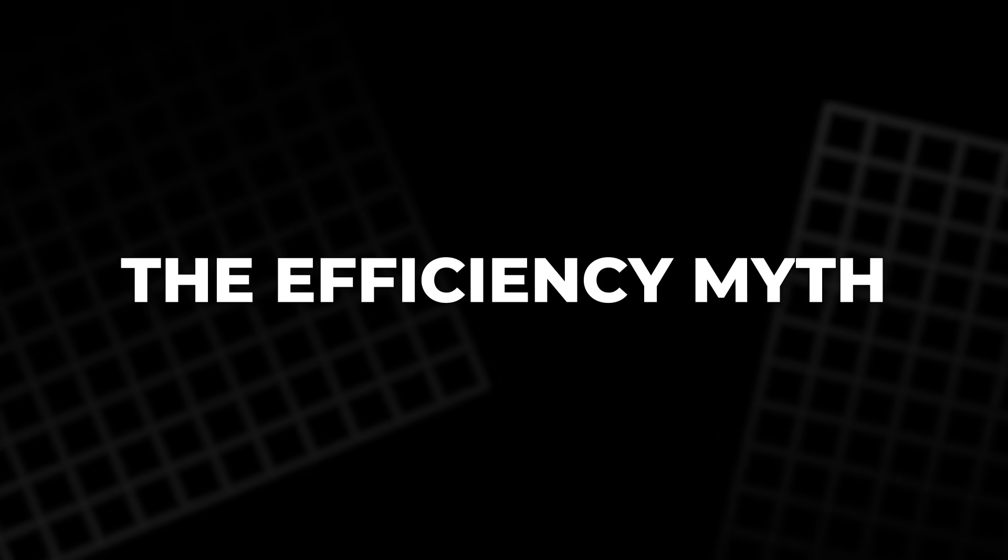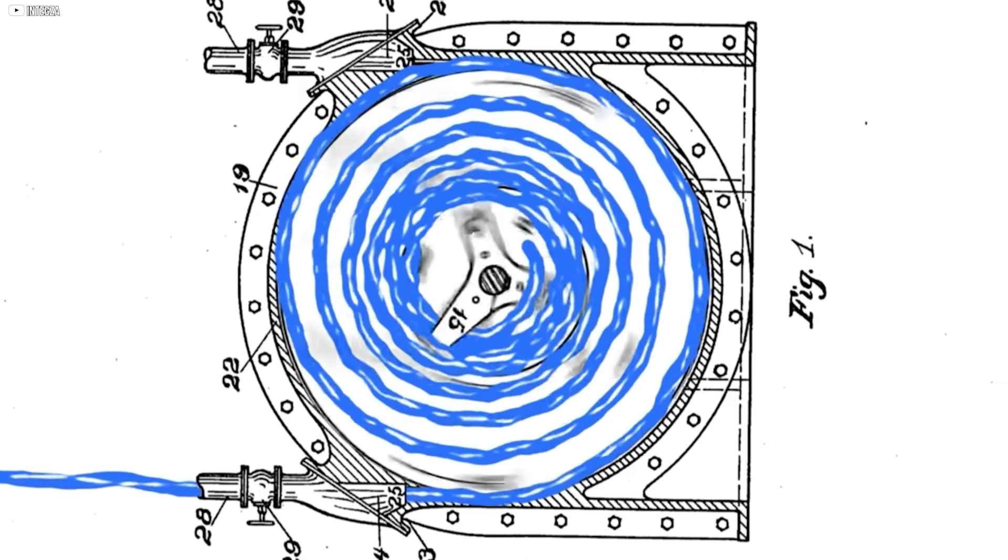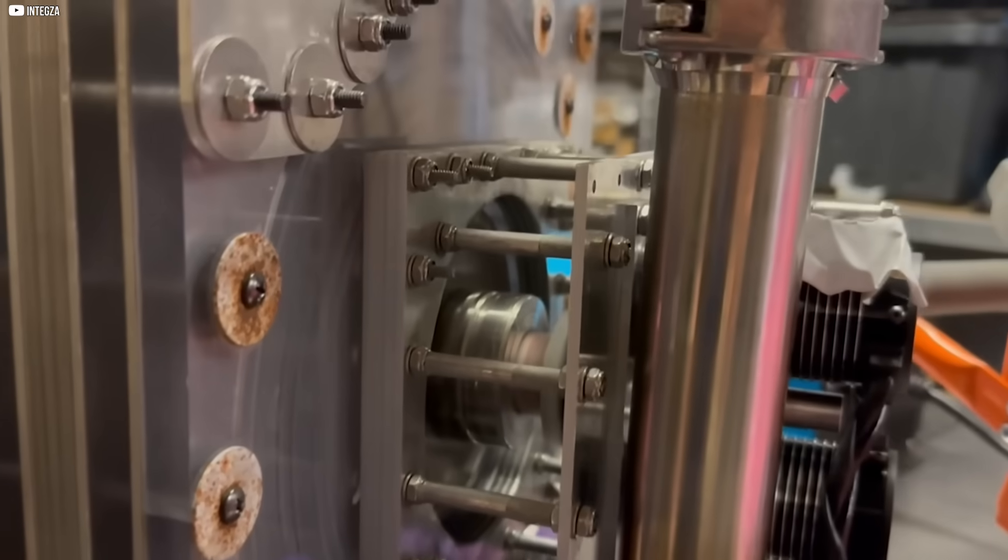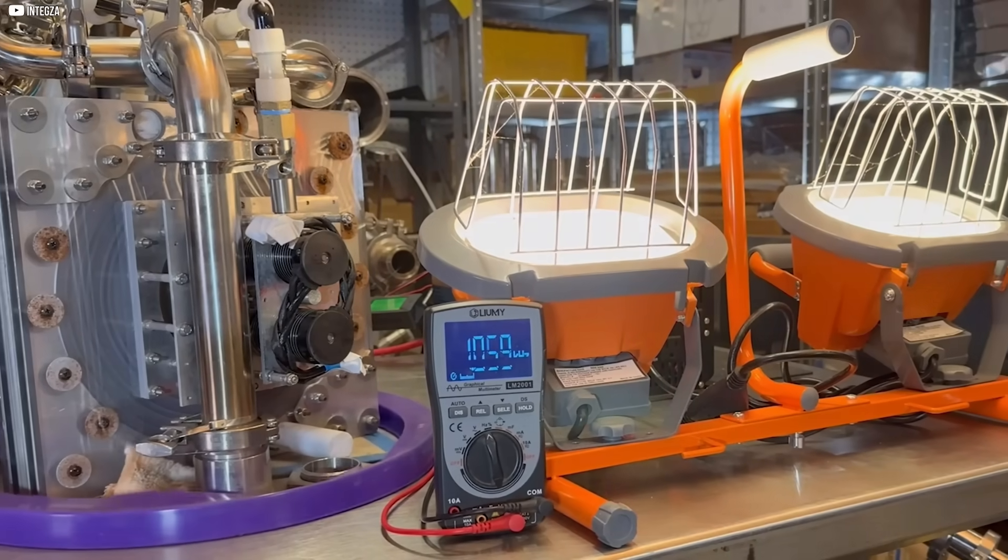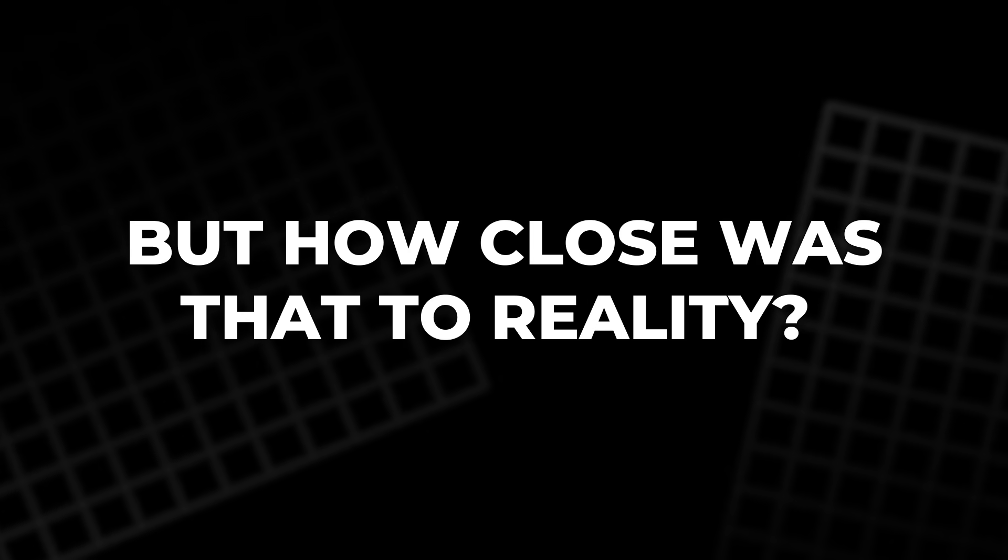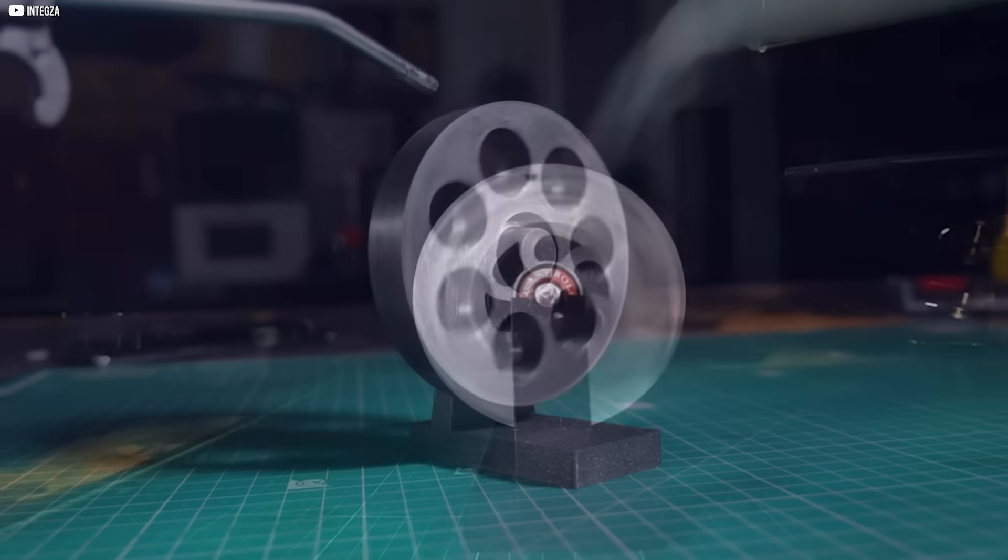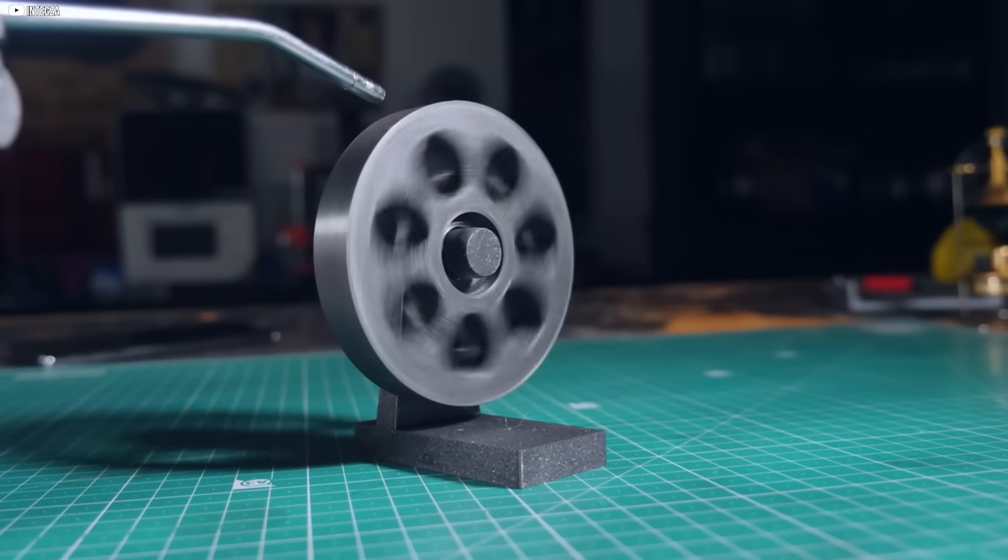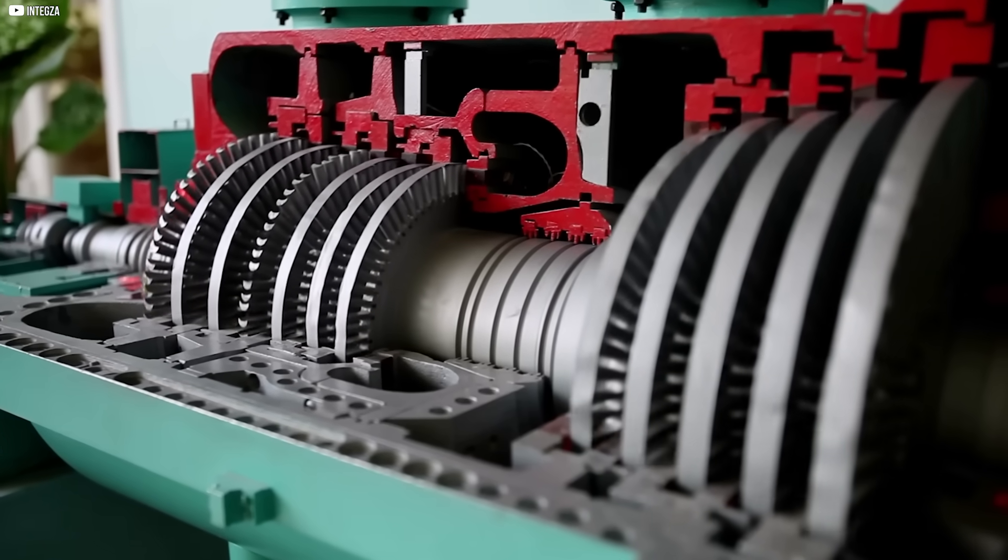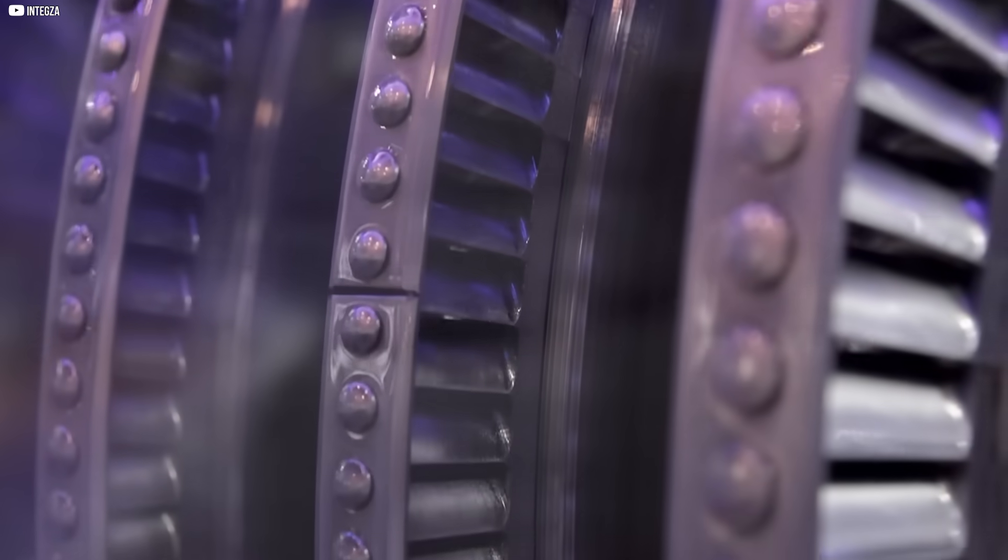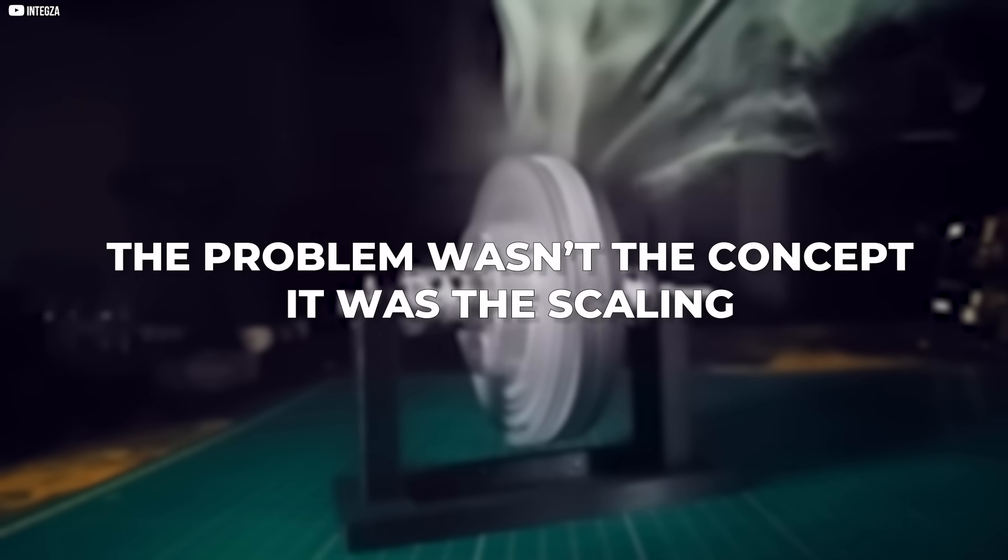The efficiency myth. Tesla boldly claimed that his turbine could achieve 97% efficiency. It's a number that grabs headlines, and it has nearly flawless energy conversion. But how close was that to reality? His small model, spinning at reduced RPMs, never truly reached such heights. That figure was likely theoretical, a projection based on ideal fluid behavior and near frictionless conditions. The problem wasn't the concept. It was the scaling.